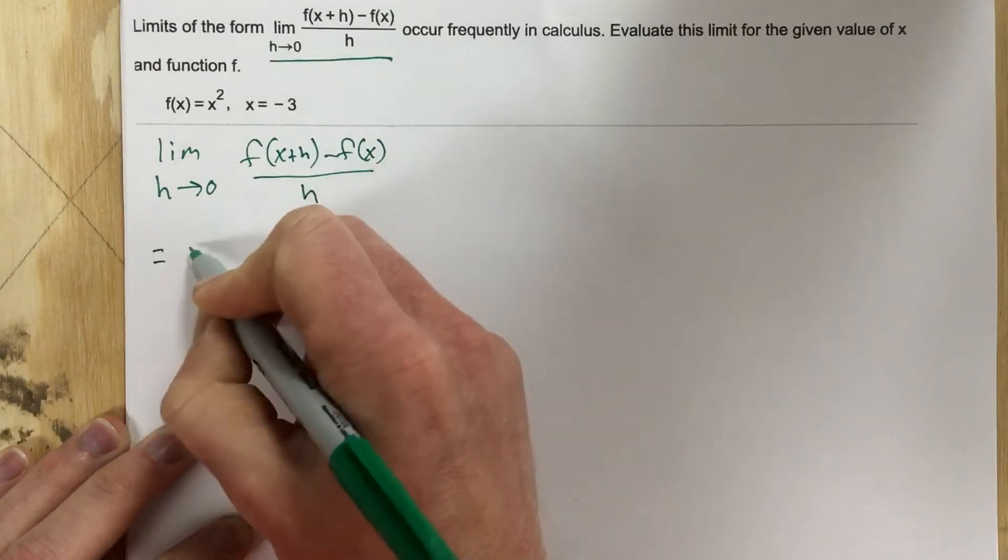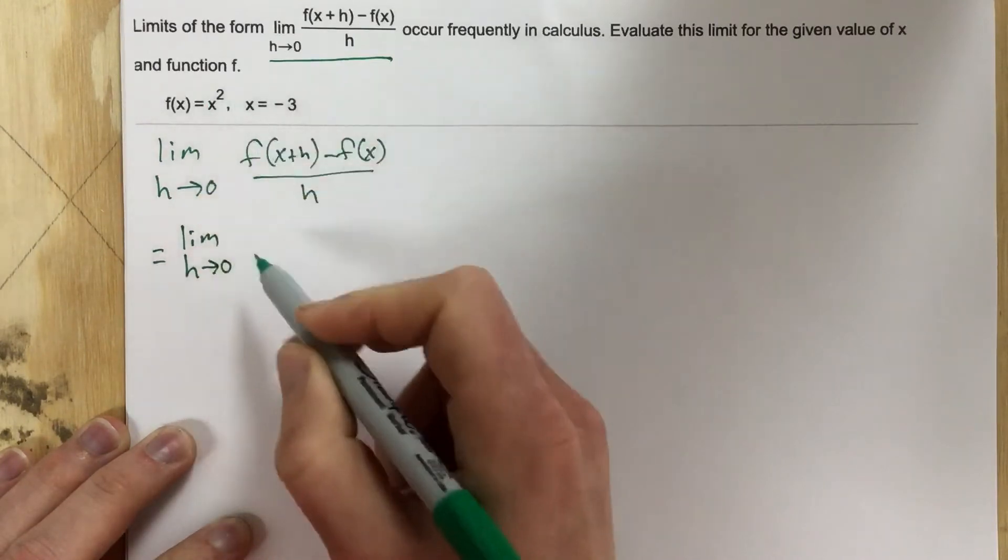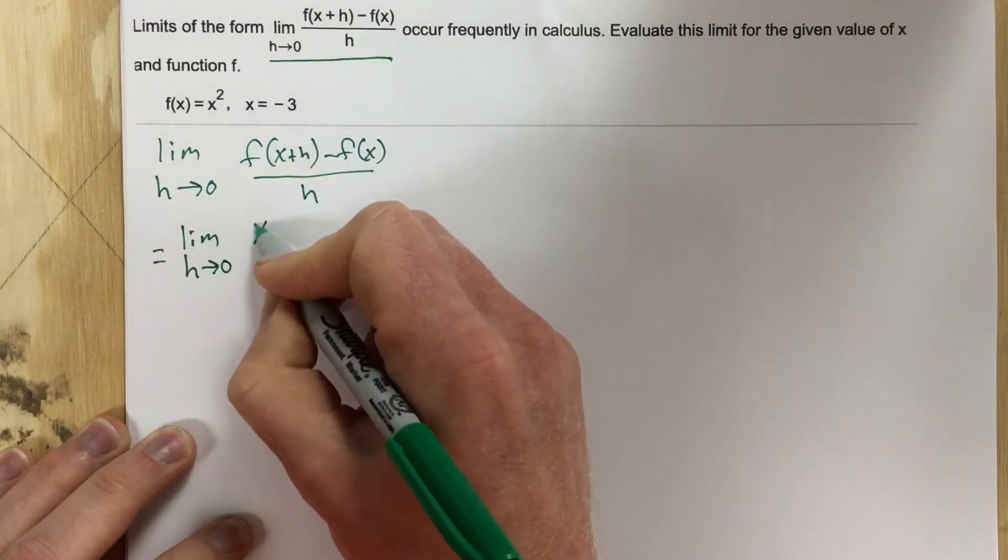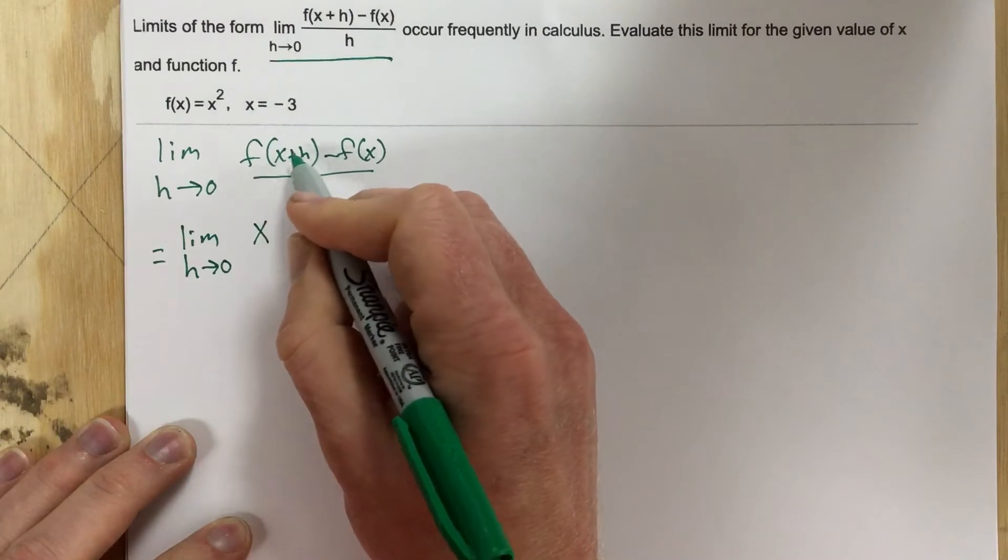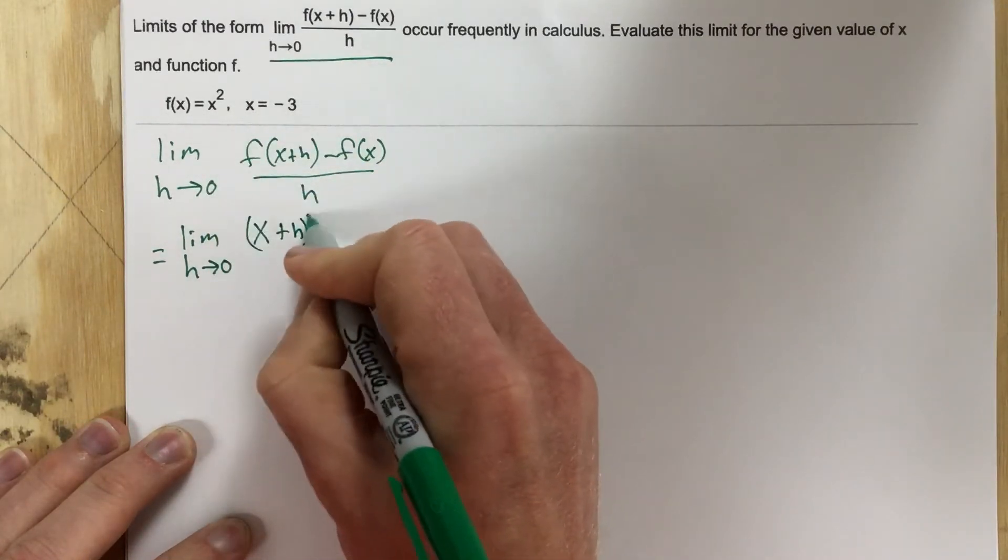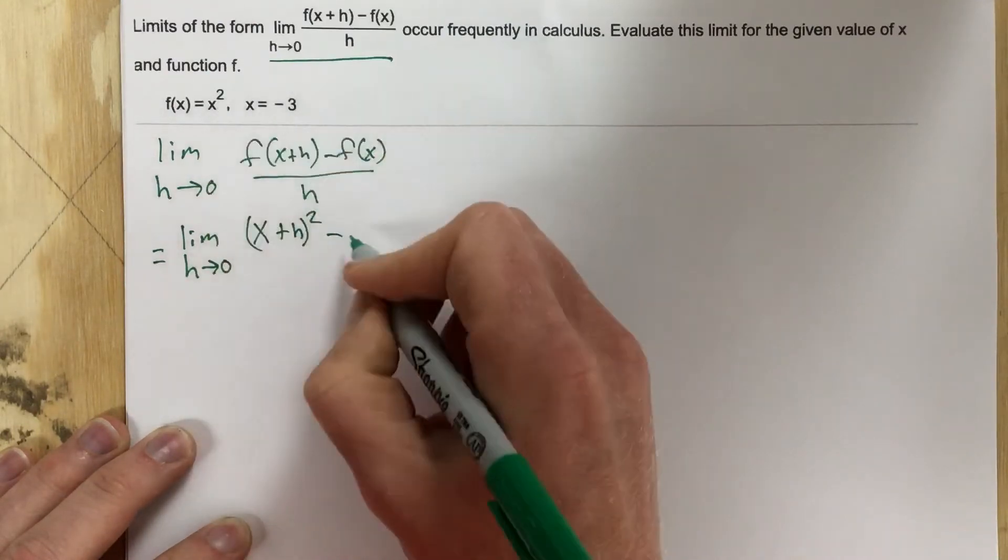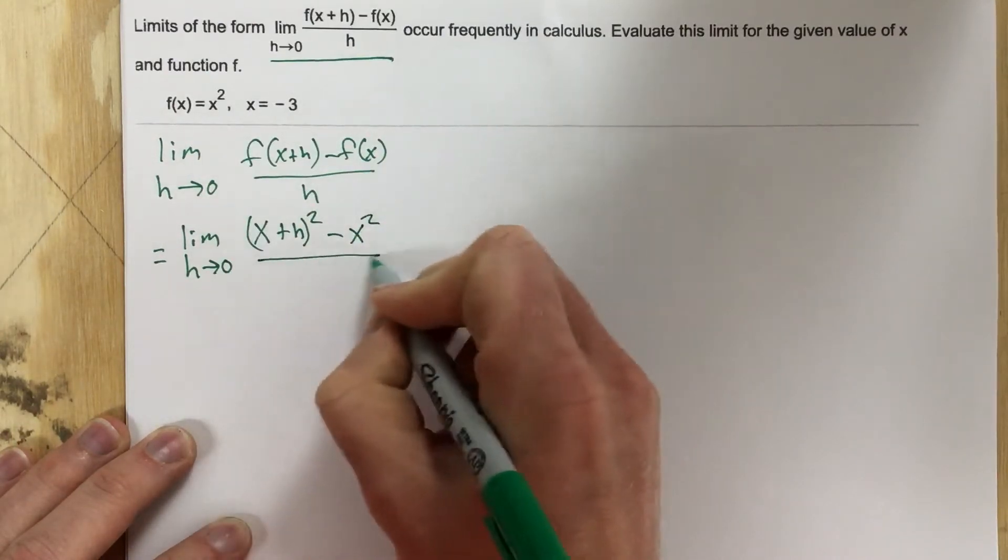We end up with, I'm plugging x plus h into x squared, so it's x plus h squared, minus the function itself, which is just x squared, all over h.